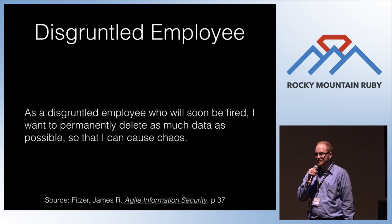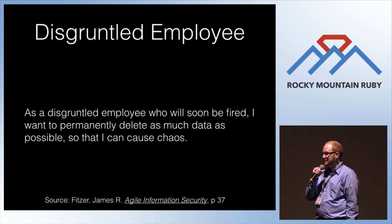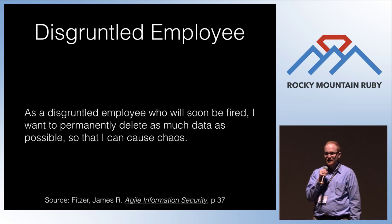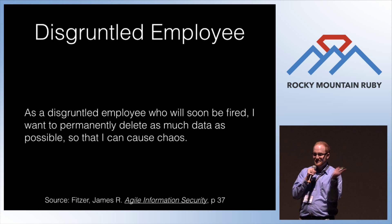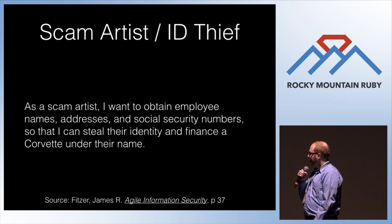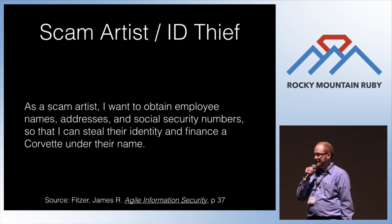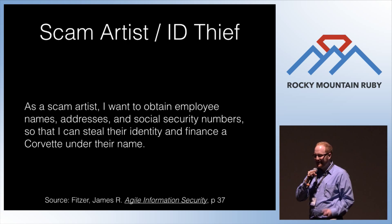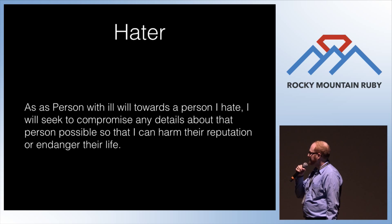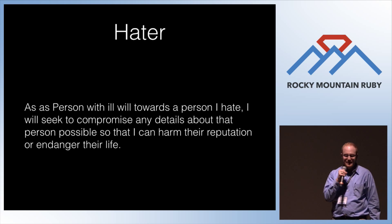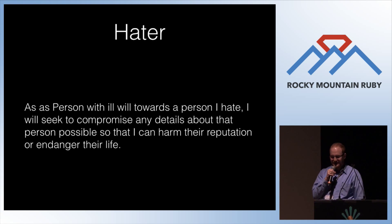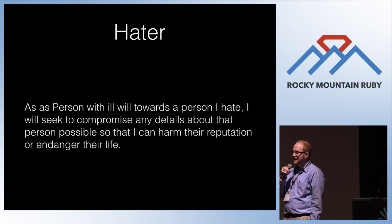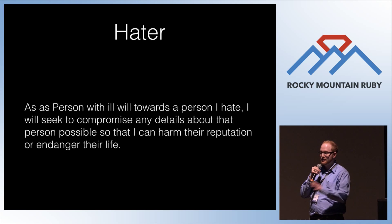As a disgruntled employee who will soon be fired, I want to delete records and generally cause havoc and chaos. This makes you think about how you implement delete — do you use paper trail or something else to back up changed data? Do you have logging turned on, and do you know what to do with it as part of your application architecture? The scam artist: as a scam artist, I want to obtain employee names, addresses, and socials so I can steal their identity. The hater: as a person with ill will towards someone I hate, I will do anything to find out their details and embarrass or endanger them. This might inform how you think about profiles and what information you contain.